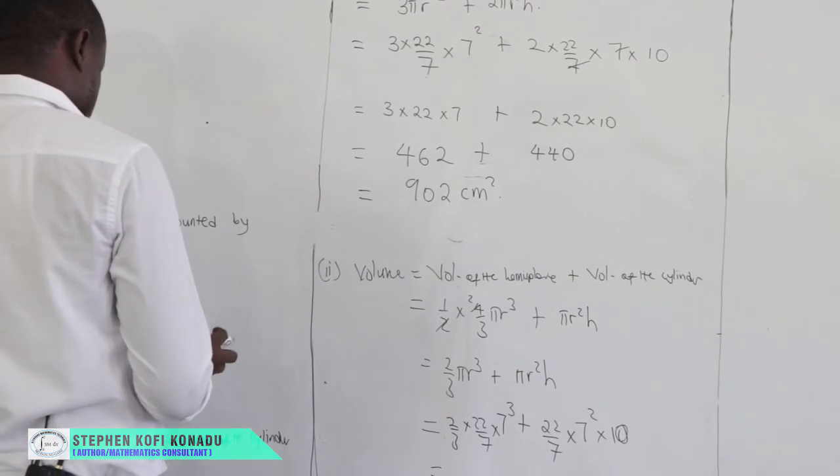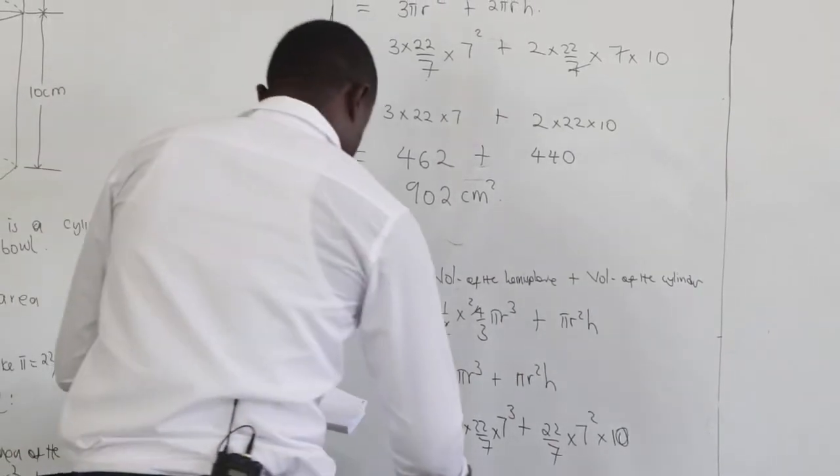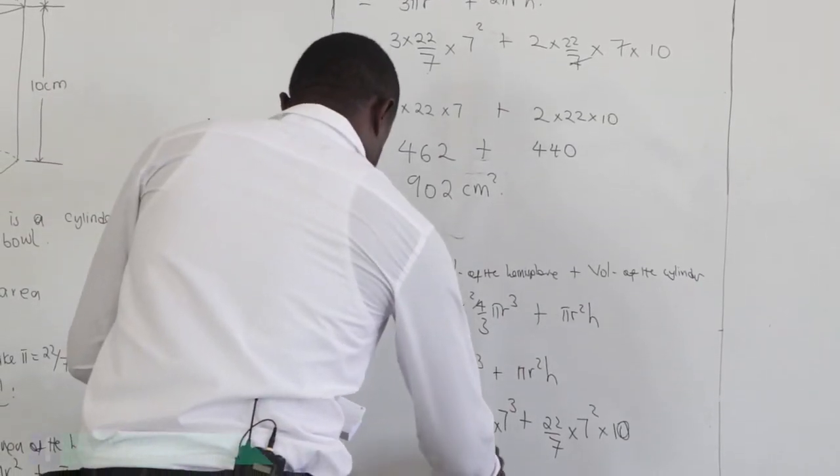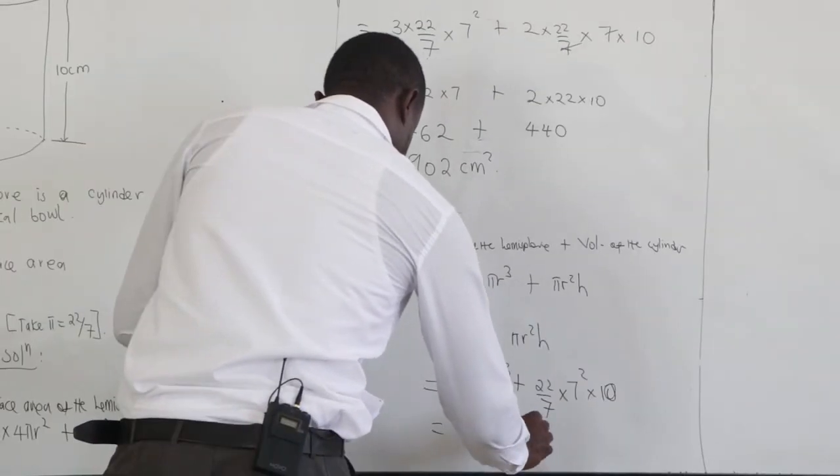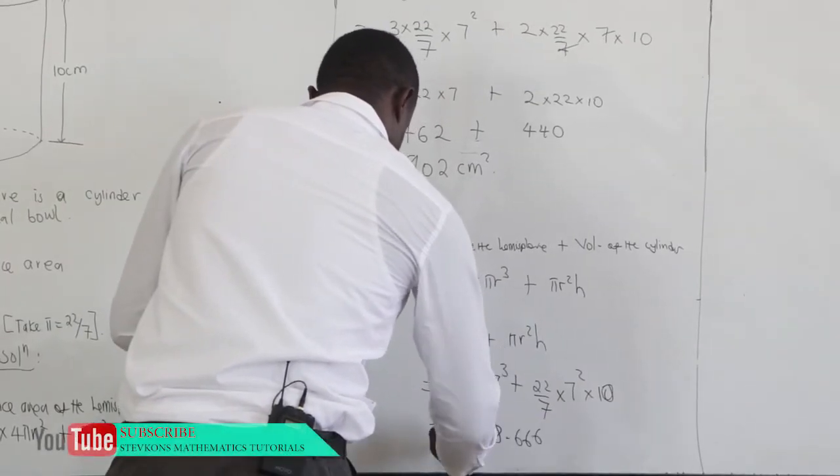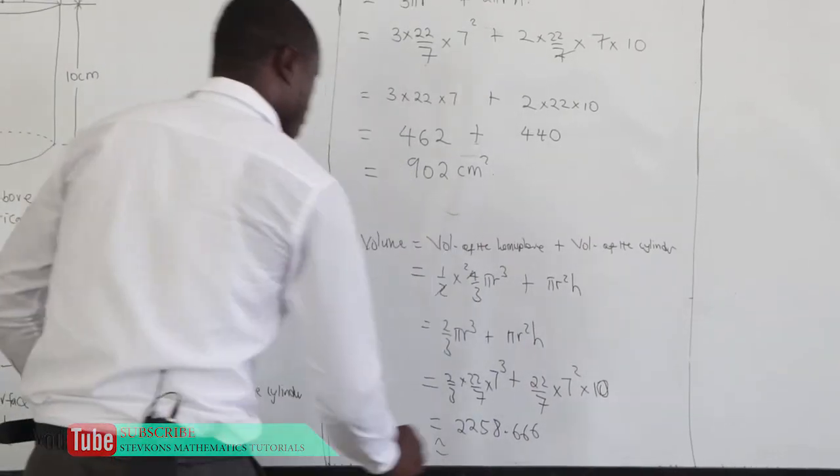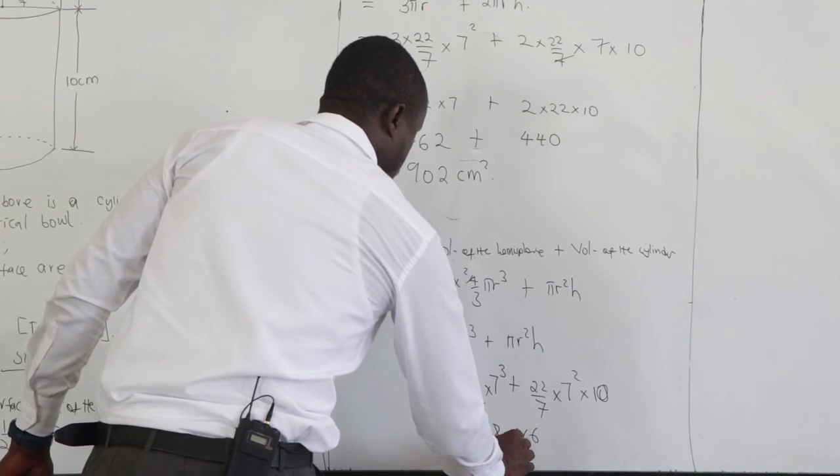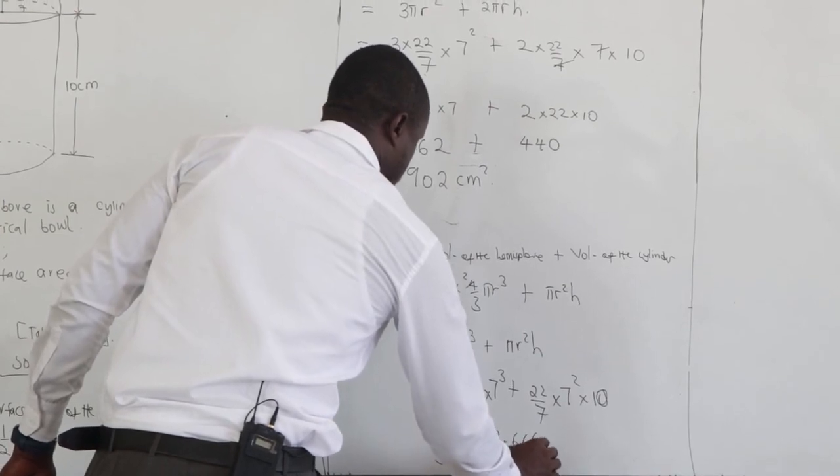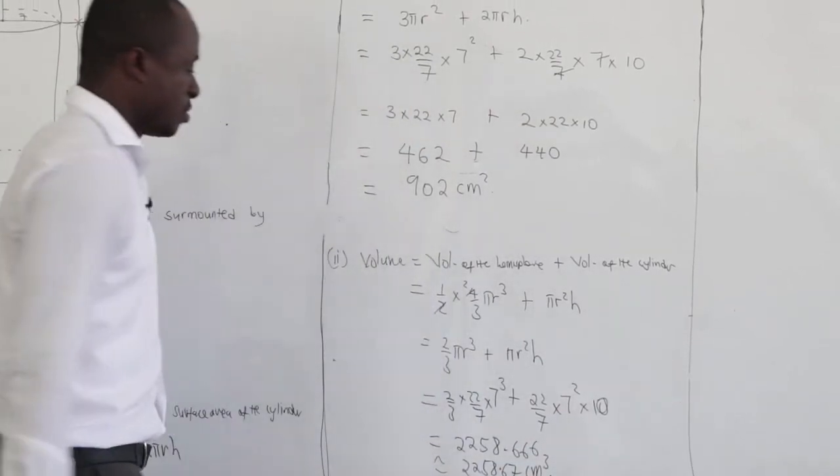When I calculate all, I would be getting 2258.666. And this, probably to 2 decimal places, I can get 2258.67 centimeter cube. So that is the volume.